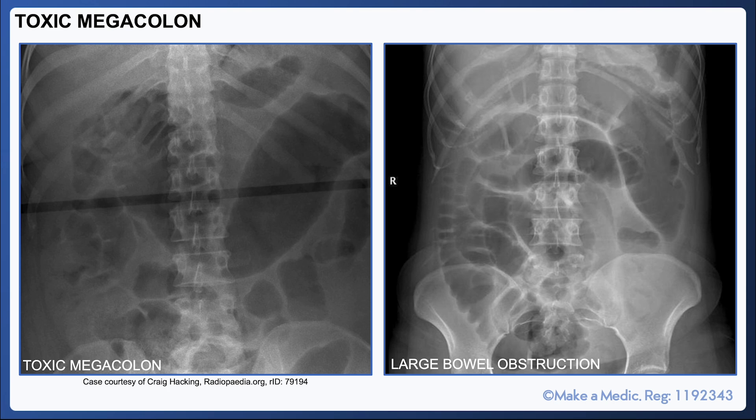Toxic megacolon is a serious complication that is usually associated with inflammatory bowel disease. It can also occur with other forms of colitis such as infectious colitis. Severe inflammation of the colon means that the bowel loses its tone, making it very dilated and friable, and patients are often systemically very unwell. On an x-ray, the colon will become very dilated — often over six centimeters — and will lack the haustral contours that are usually seen in large bowel obstruction.